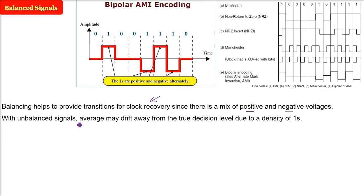If the signal is unbalanced, that is more positive or more negative, the average may drift away from the true decision level. There may be densities of ones.